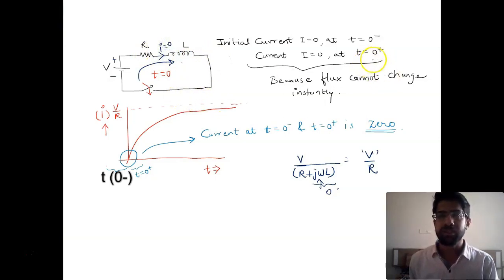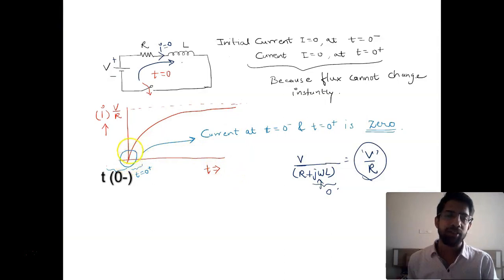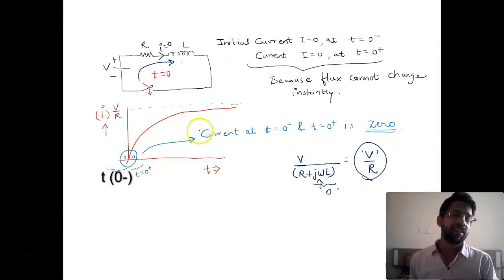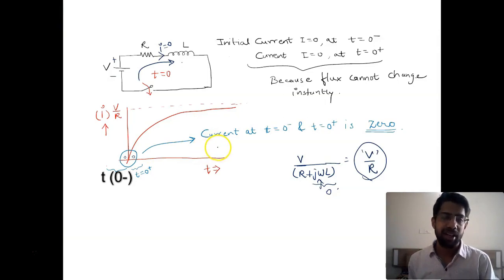At t = 0⁺, the current is still zero. The current which is expected — V/R — only attains its maximum value V/R after some time. The graph of current with respect to time rises exponentially: initially the current is zero, and even just after you close the switch the current is zero. This is how you treat an RL circuit with a DC source, and this is the application of the constant flux linkage theorem to identify currents just before and just after the transient.